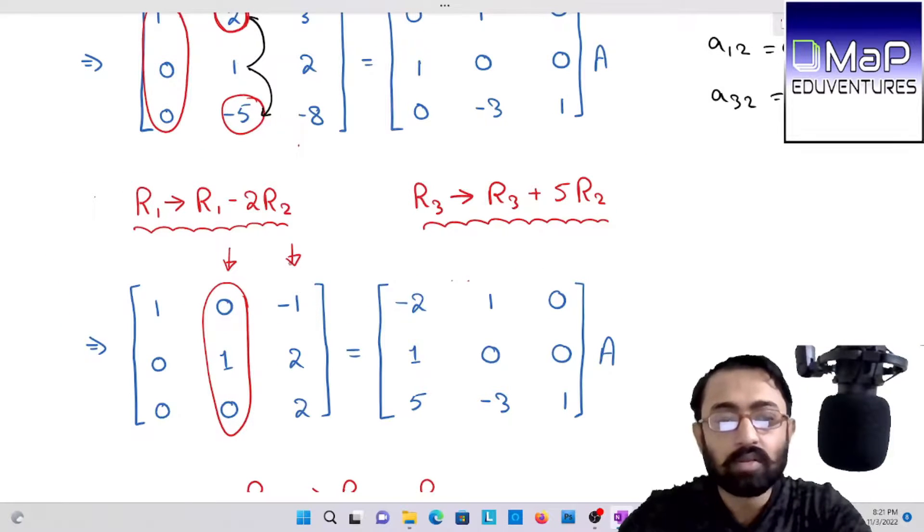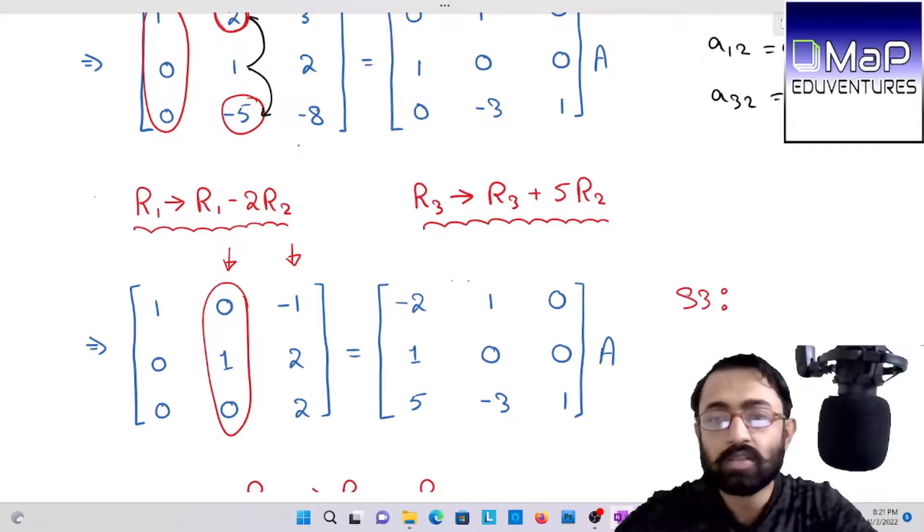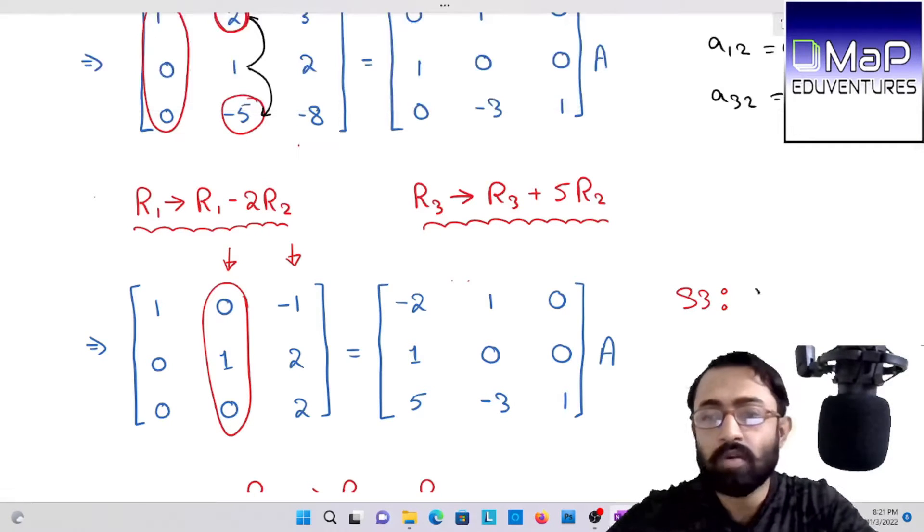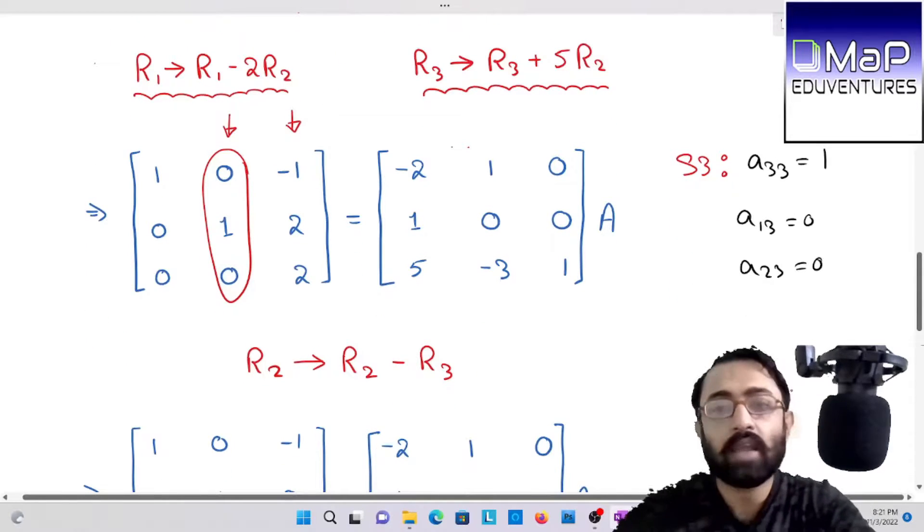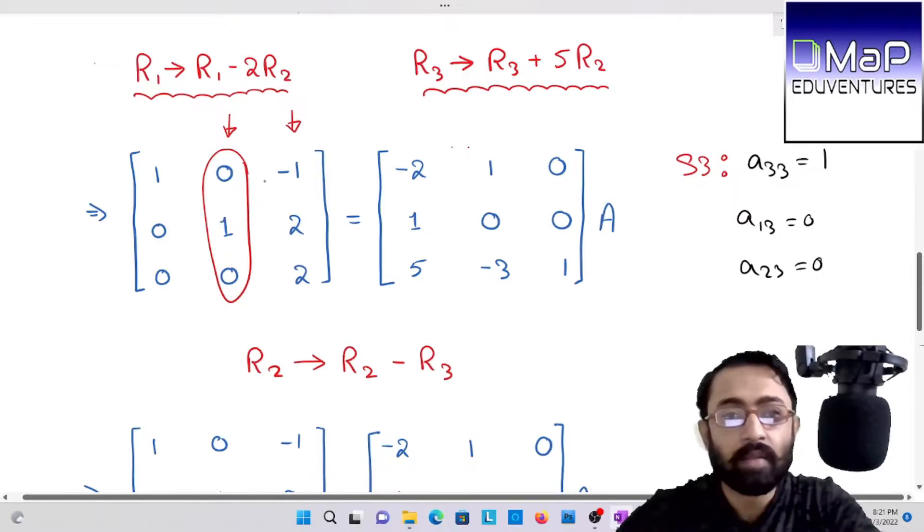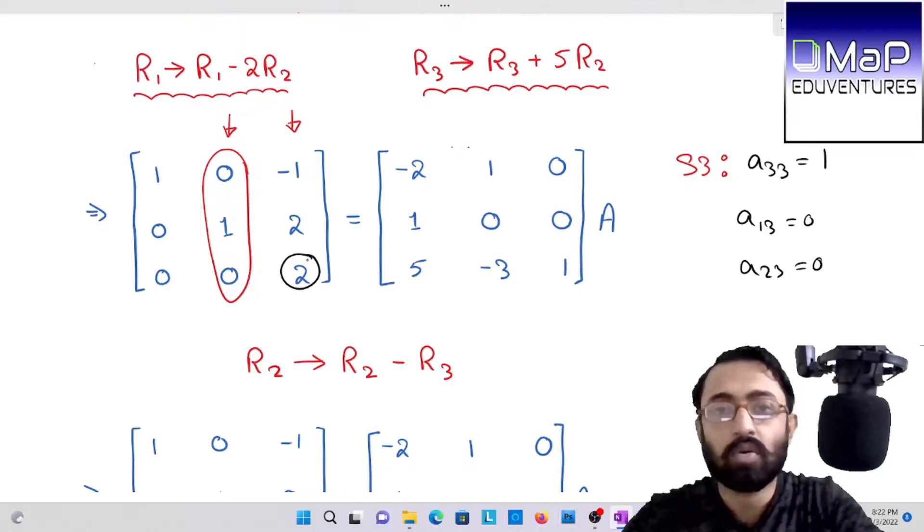After completing the second column, we move to the third column. The third column, the third step: A33 one, and with its help A13 zero and A23 zero. With the help of A33, make A13 and A23 zero. Now first of all observe, A23 is two. To make it one, you have to divide the third row with two.